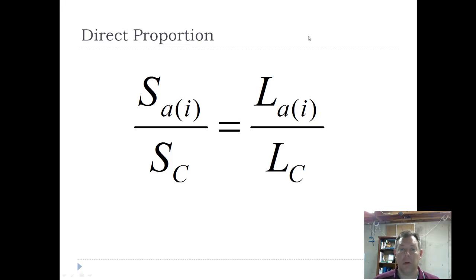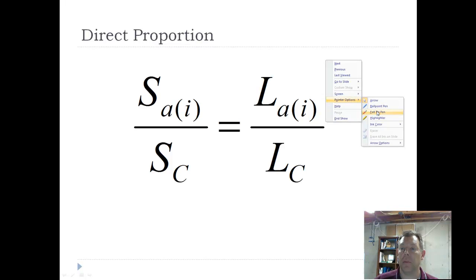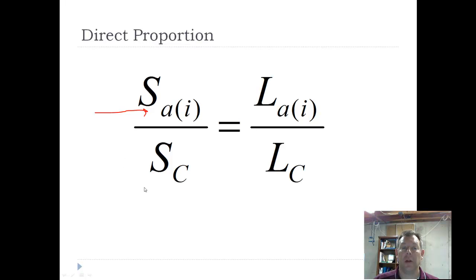And usually you know three of these things. You should know three of these. You know the length to each annulus, you know the scale length, you know the length of the fish when you captured. What you're looking for is the length of the fish at each annulus.